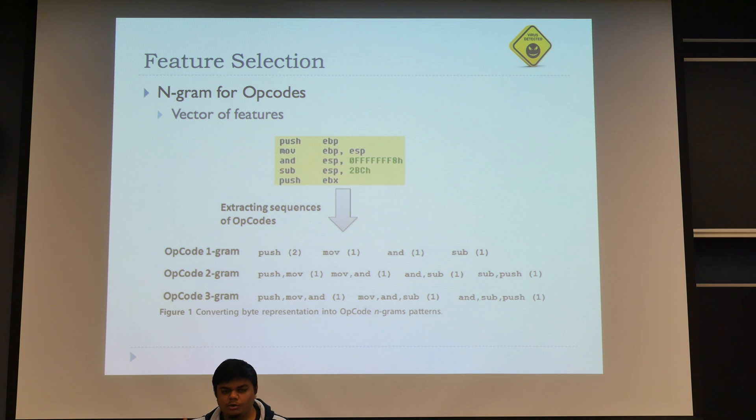That's why we went for bigrams and trigrams. In bigrams, you basically choose two instructions and take into account their order. So push followed by move becomes one feature, move followed by and becomes another feature, and so on. You do the same for trigrams.